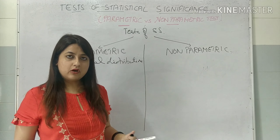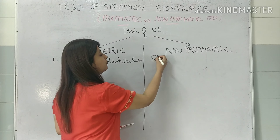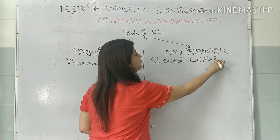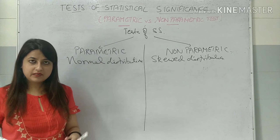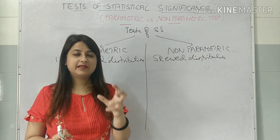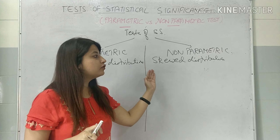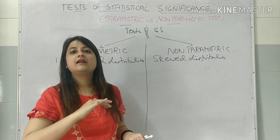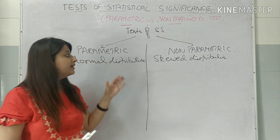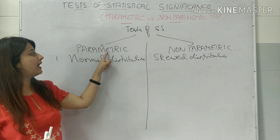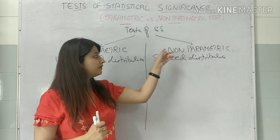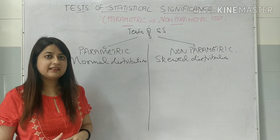Contrary to this, non-parametric tests are applied when we have a skewed distribution. Quick addition: normal distribution means that mean equals median equals mode — all three coincide. Skewed distribution is when the data or distribution is tilted to one side. So if the distribution is normal, you will apply a parametric test. If it is non-normal or skewed, we will apply a non-parametric test.